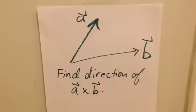To find the magnitude, you would do A times B times the sine of the angle between them, but we just want to find the direction right now. And to do this, we're going to use the right-hand rule, but first we can use a little bit of logic.